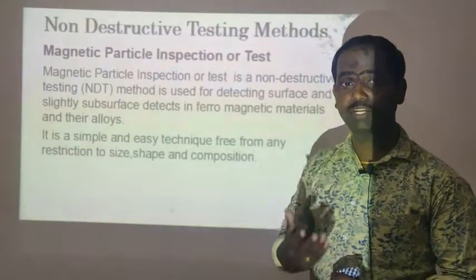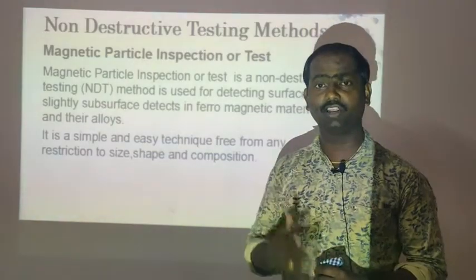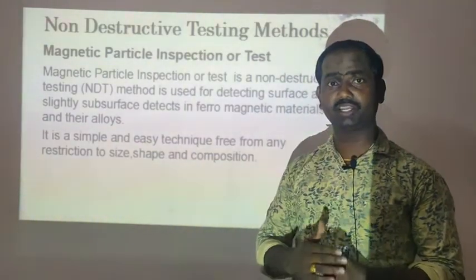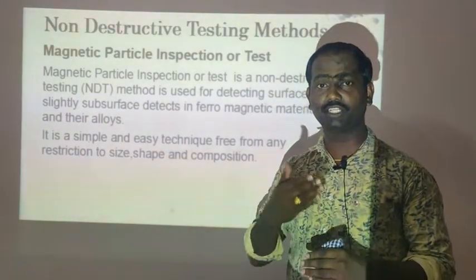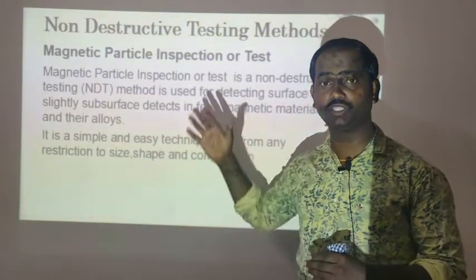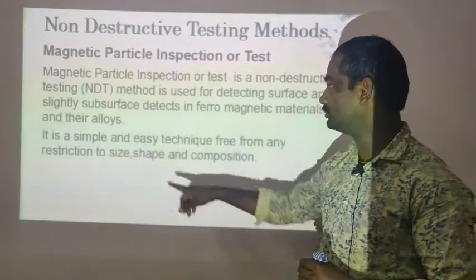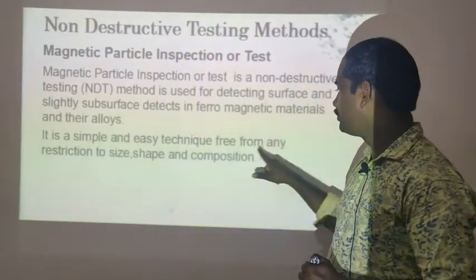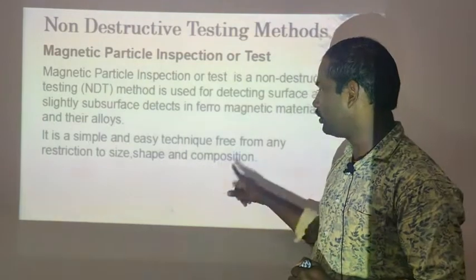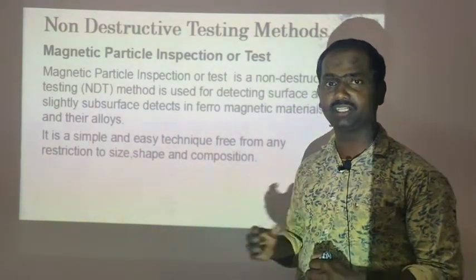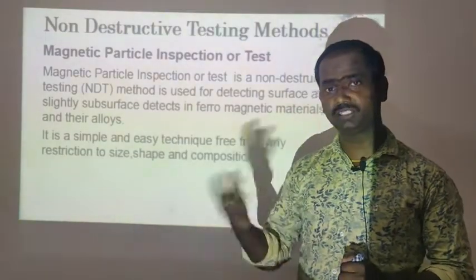The materials used are ferromagnetic materials and metals. We can use magnetic particle inspection on various parts. It is a simple, easy technique, free from any restriction to size, shape, and composition.